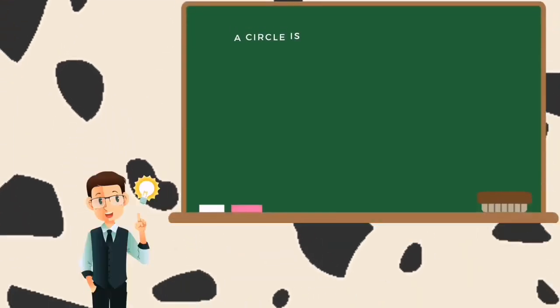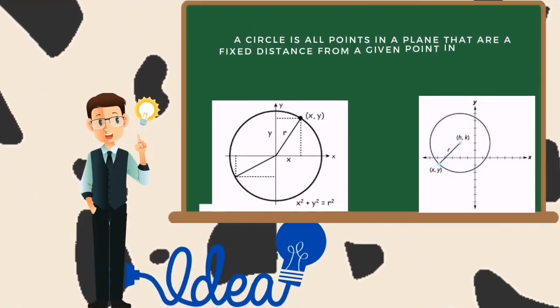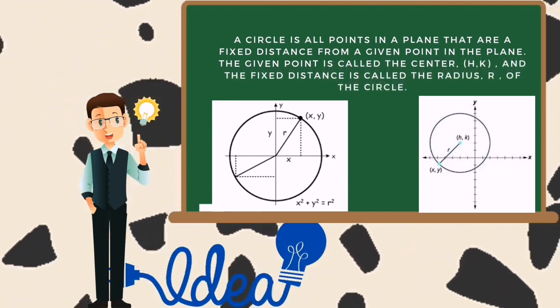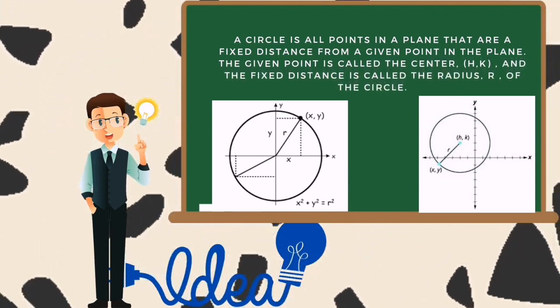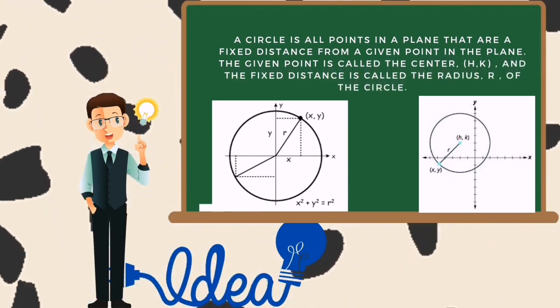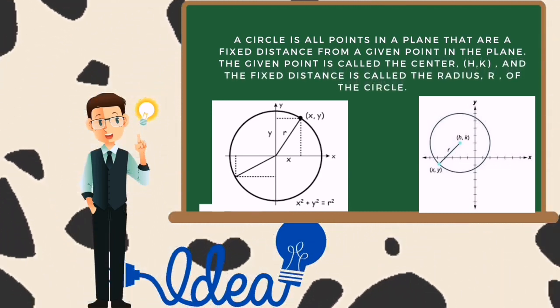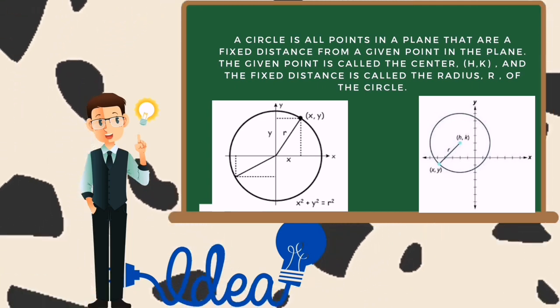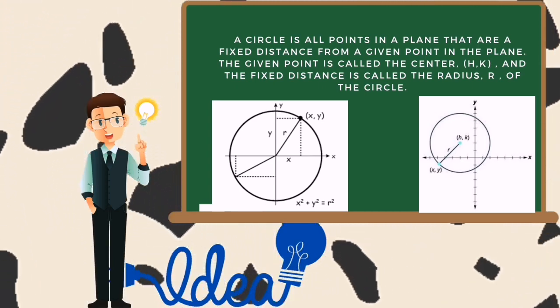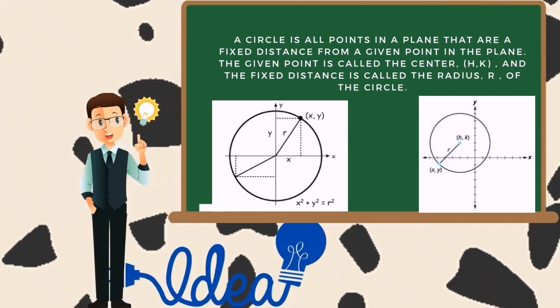So what is a circle? A circle is all points in a plane that are a fixed distance from a given point in the plane. The given point is called the center, or (h, k), and the fixed distance is called the radius, or r, of the circle.